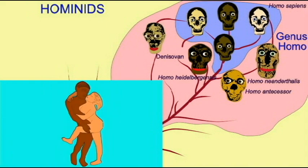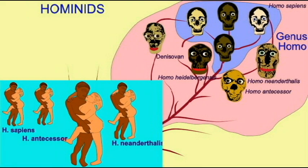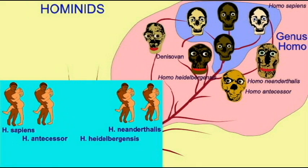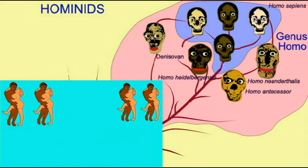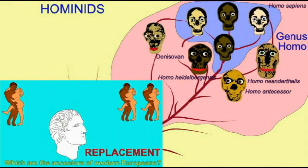One model, the replacement model, holds that these more primitive species became extinct, and that all modern humans owe 100% of their ancestry to this group of Homo sapiens.